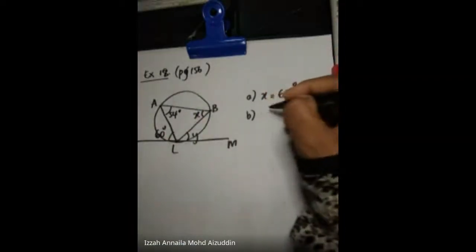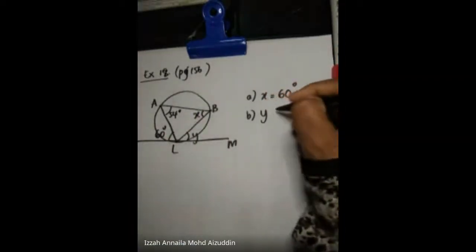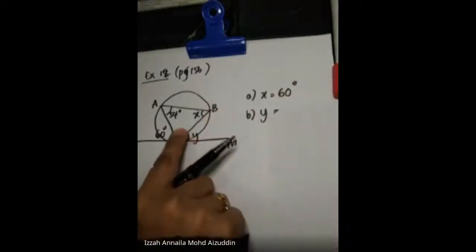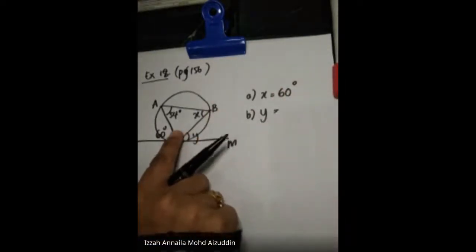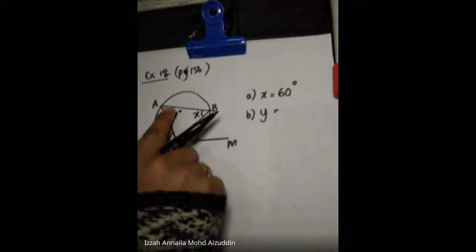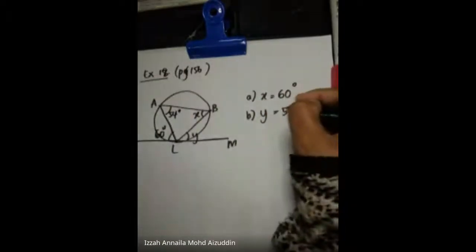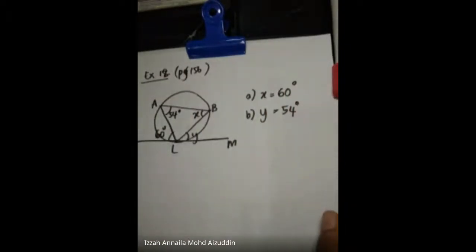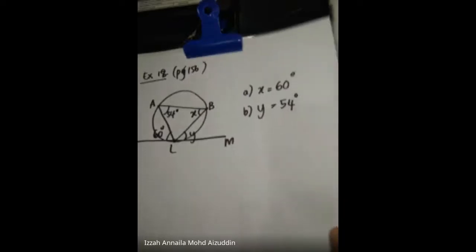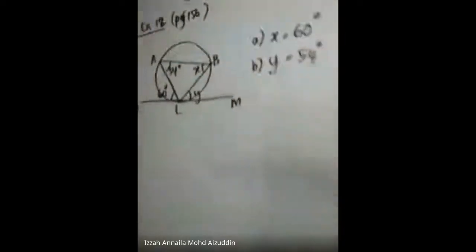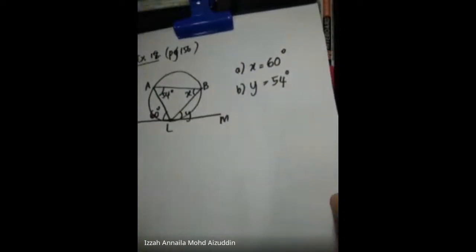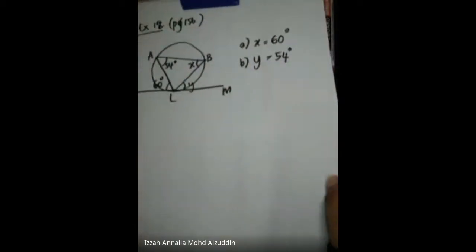Next, what is the value of Y? This is the interior angle and 54 degrees is the exterior angle — the opposite. Using the alternate segment theorem, Y equals 54 degrees.